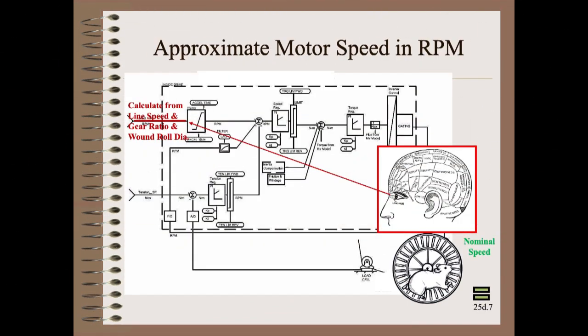Our squirrel is very smart. He knows that good motor control requires, first and foremost, to get a close speed setting to begin with. He calculates the approximate RPM he needs from the very closely known line speed settings, gear ratio, and wound roll diameter. Here, he calculates that two pellets are needed to get close to the required conditions.